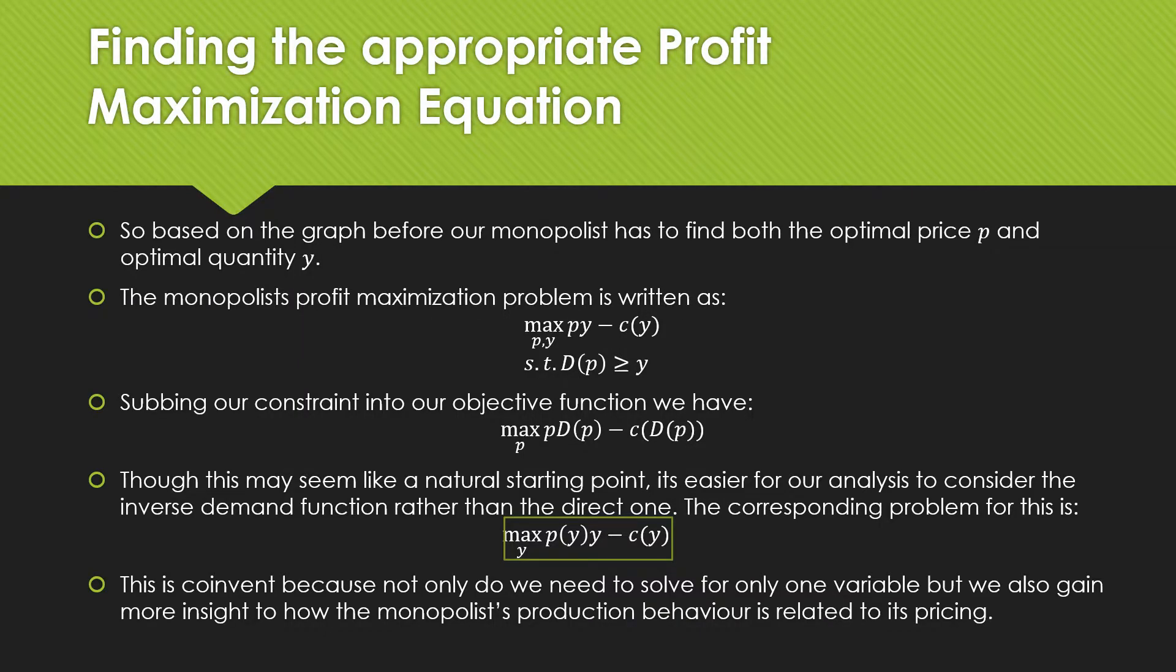So based on the graph before, our monopolist has to find the optimal price P and optimal quantity Y. The monopolist profit maximization problem is written as the following: He has to choose P and Y such that this function is maximized such that its demand that it faces is greater than or equal to what it produces.